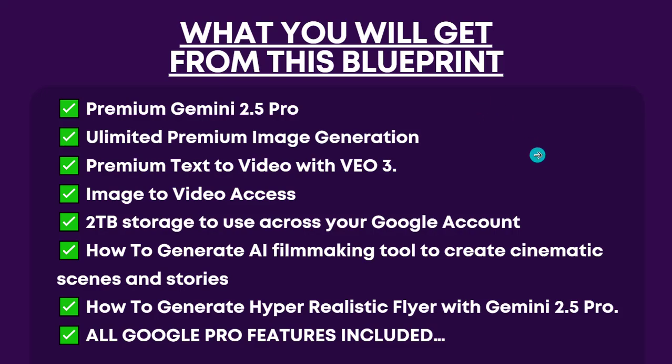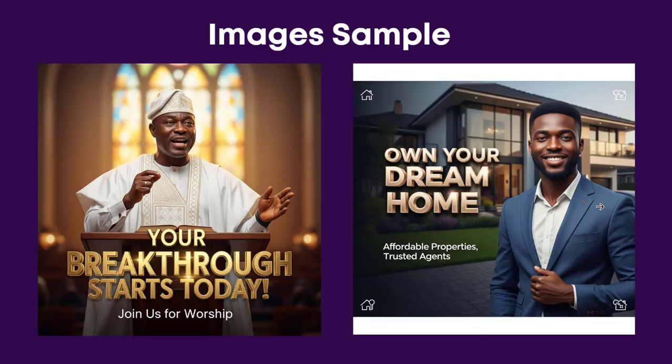These are the series of things you are going to be getting access to. These are a few samples of images or flyers generated with the Google new model, which is Gemini 2.5 Pro, which you are going to be getting access to for free if you get these blueprints. You will be getting access to Google Pro, which includes Gemini 2.5 Pro, Veo 2, and so much more other premium Google assets — for one year plus three months, and you can do it over and over again for multiple Google accounts.